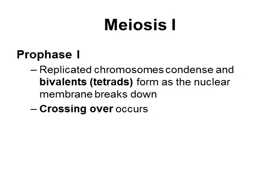In meiosis I, we have prophase I. Our replicated chromosomes are already condensed, having been replicated in the S phase of interphase. This is where those bivalents or tetrads form. As the bivalents form, the nuclear membrane starts to break down to allow the chromosomes into the cytoplasm. Additionally, crossing over occurs — that physical exchange between your homologous chromosomes — which creates more genetic variation.